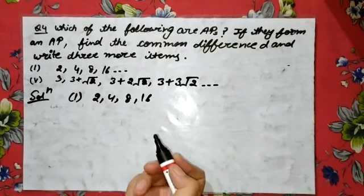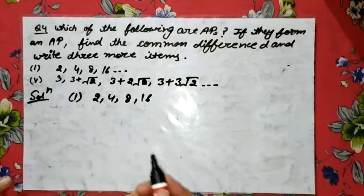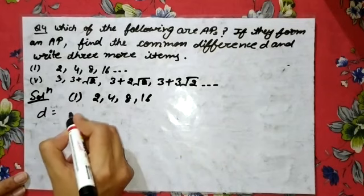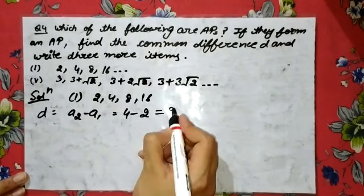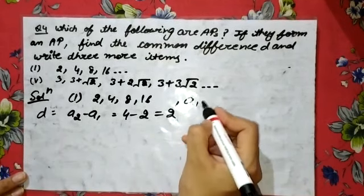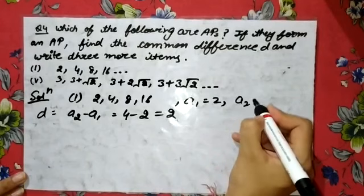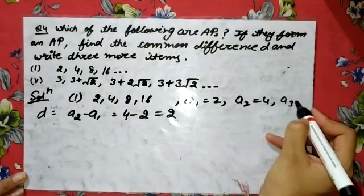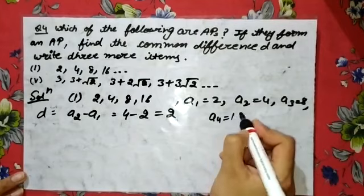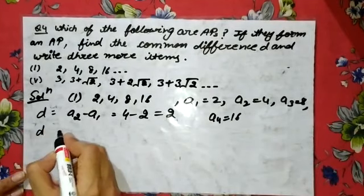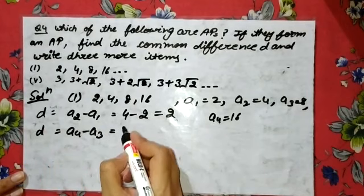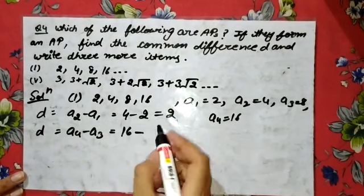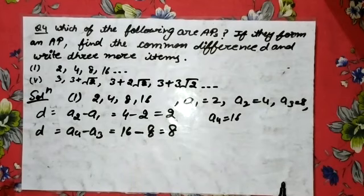D equals A2 minus A1, that is 4 minus 2, which is 2. A1 is 2, A2 is 4, A3 is 8, A4 is 16. After that, D is also A4 minus A3. A4 is 16 and A3 is 8, which gives you 8. Similarly, A3 minus A2 will give you 4.